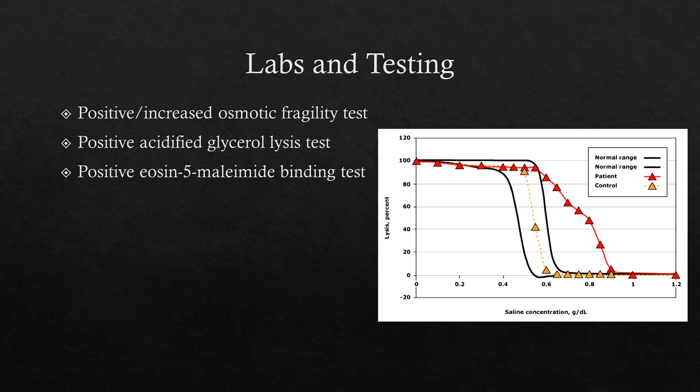The acidified glycerol lysis test is essentially a more efficient variant of the osmotic fragility test — you don't need the specifics, just that it's very similar. The eosin-5-maleimide (EMA) binding test is one of the more common tests used in practice. A dye is applied to the cells and the binding capacity to the affected membrane proteins is measured; the readout indicates whether hereditary spherocytosis is present.